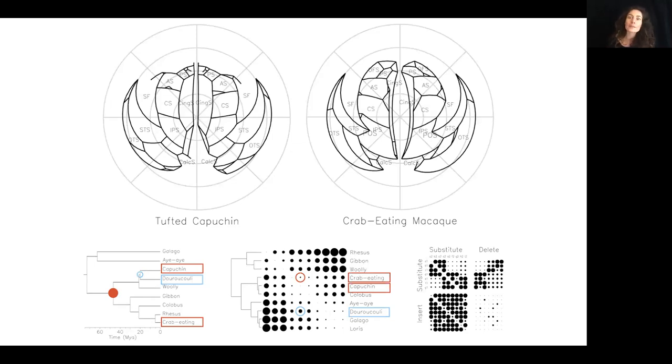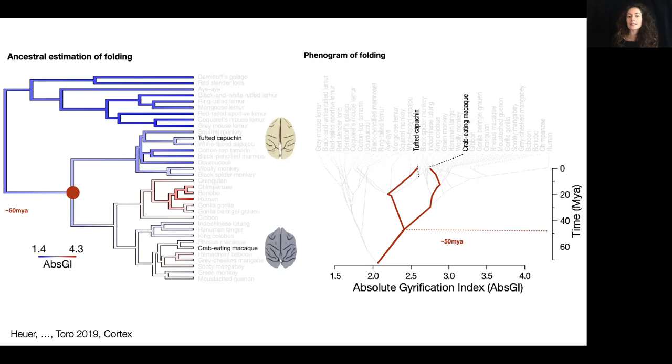We use the graph edit distance algorithm to measure how similar these graphs are. The graph edit distance algorithm allows us to estimate the number of edits we would need to derive one graph into another graph. Here we did that for the example of the tufted capuchin and crab-eating macaque. If you look at the phylogenetic tree, you would expect that they wouldn't have a similar folding pattern, more similar than the Douroucouli, which is very close in the phylogenetic tree. For the crab-eating macaque, the common ancestor was 47 million years ago. What we actually see with the graph edit distance measurement is that to derive a crab-eating macaque into a tufted capuchin, only very few edits are needed. However, if you want to transform a capuchin into a Douroucouli, which are phylogenetically closer, the folding pattern is much more different.